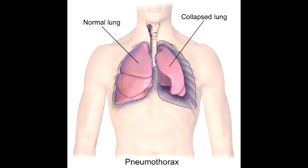Describe the tracheal deviation that you see with spontaneous pneumothorax. In spontaneous pneumothorax, you would see the trachea deviating towards the affected lung.